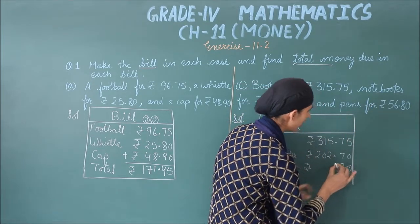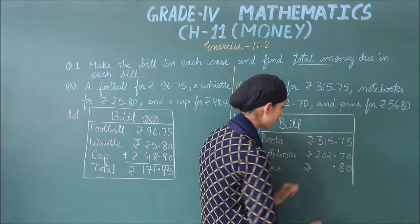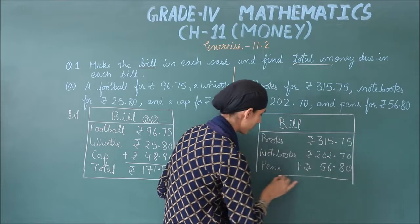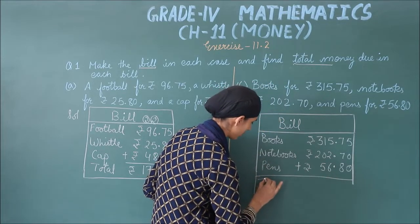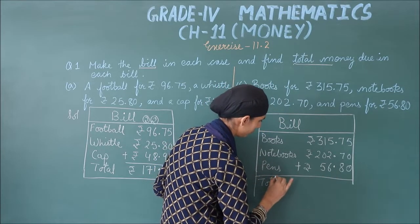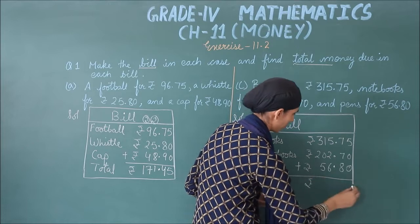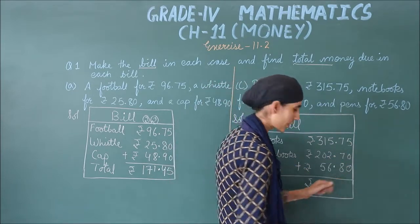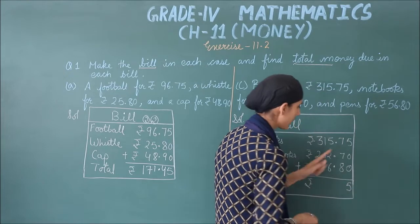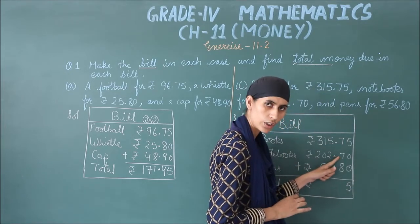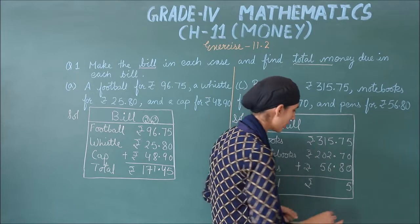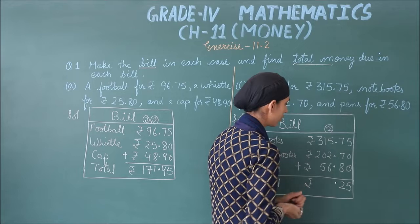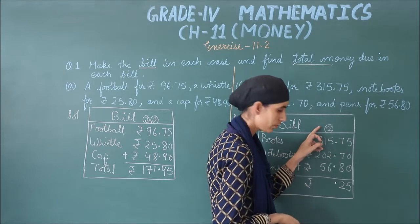Make sure there are no mistakes — note that the 110th place values are given. Next we will find the total — add all of them. 5 plus 0 plus 0 is 5. Next: 7 plus 7 is 14, 14 plus 8 is 22. Write 2, carry 2. Then: 5 plus 2 is 7, 7 plus 2 is 9.